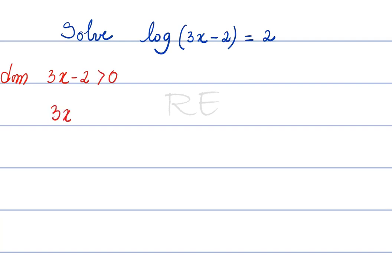3x minus 2 must be greater than zero for the log to exist. 3x must be greater than 2 and x greater than 2 thirds.